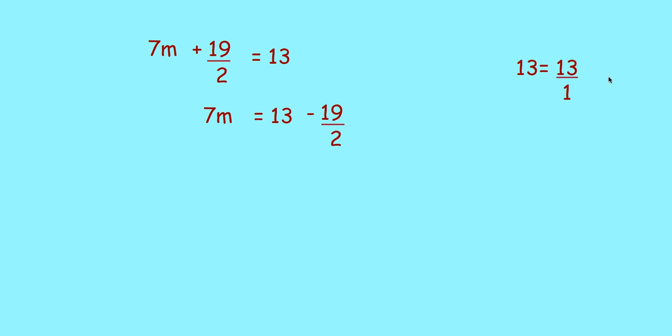You know, 13 is, you can write it as 13 by 1. So, 13 by 1 minus 19 by 2. LCM, you can take it as 2. Here, 1 to 2 times, so numerator will be 13 into 2. And, 2 to 1 times, so it is 19 into 1 by 2. This kind of operation you already studied.